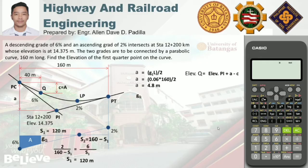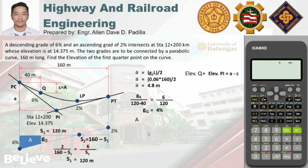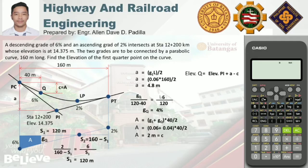Now finding area c, the shaded portion bounded by PC and Q in the grade diagram: (g1 plus gQ) times 40 divided by 2 = (0.06 plus 0.04) times 40 divided by 2 = 2 meters. This is also the difference in elevation between PC and Q. Substituting into the main equation: elevation of PI plus a minus c = 14.375 plus 4.8 minus 2, giving a final answer of 17.175 meters.